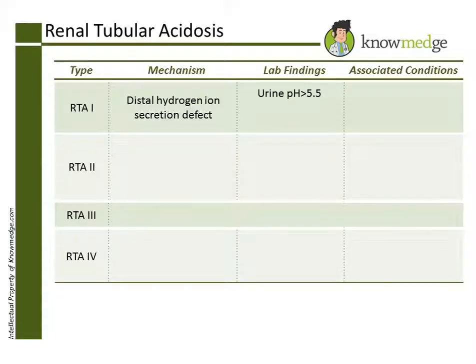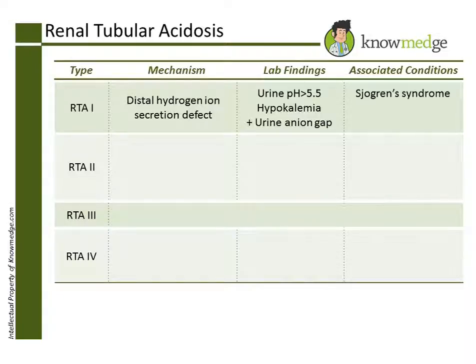The affected proton secretion channel is also responsible for potassium uptake from the urine. Therefore, the serum potassium will be low, and a positive urine anion gap will be present. RTA type 1 associated conditions include Sjogren's syndrome, nephrolithiasis, and urinary obstruction.